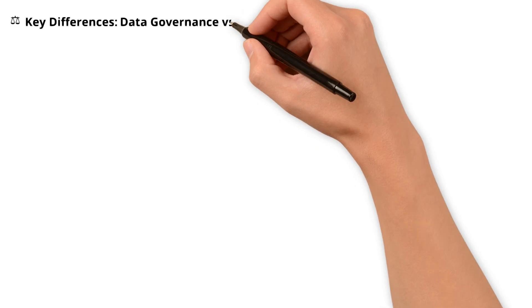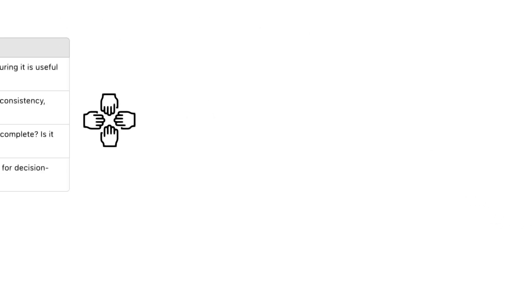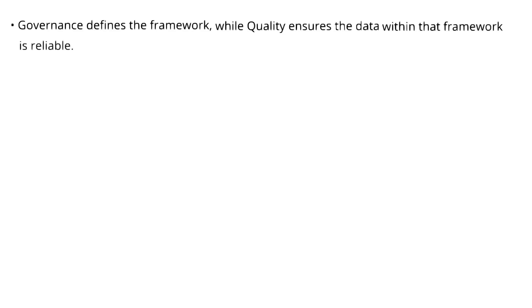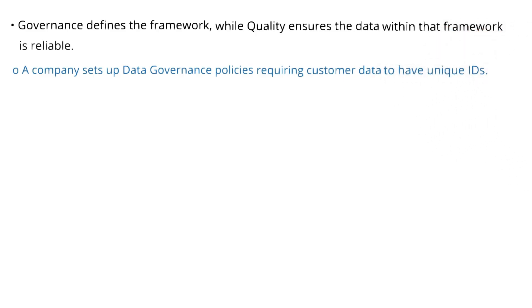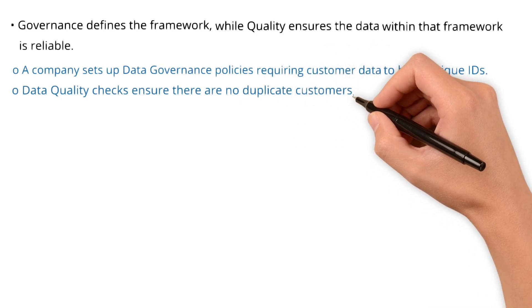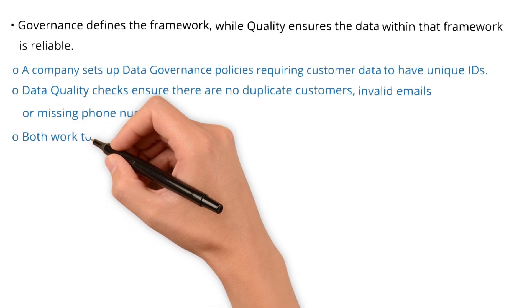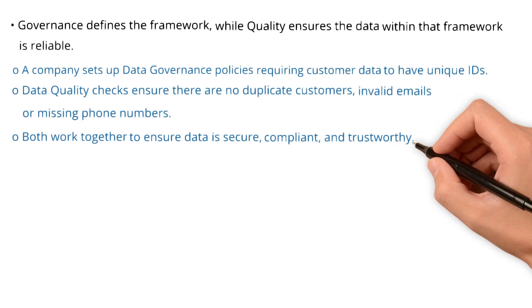While these are the differences, data governance and data quality work together. Governance defines the framework, while quality ensures the data within the framework is reliable. For example, a company sets up data governance policies requiring customer data to have unique IDs. Data quality checks then ensure there are no duplicate customers, invalid emails, or missing phone numbers. Both work together to ensure data is secure, compliant, and trustworthy.